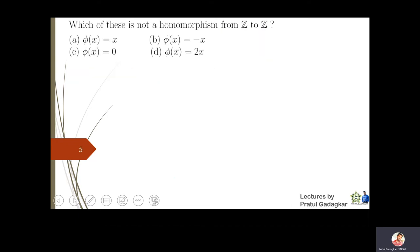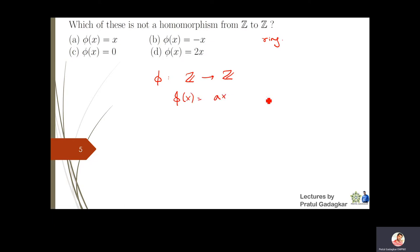The next question is: which of these is not a ring homomorphism from Z to Z? A ring homomorphism from Z to Z is of the form phi(x) = ax, where a must be idempotent. Since 0²=0 and 1²=1, there are only two homomorphisms: phi(x)=0 and phi(x)=x. Therefore, -x and 2x are both functions which are not homomorphisms from Z to Z.